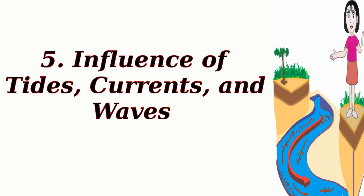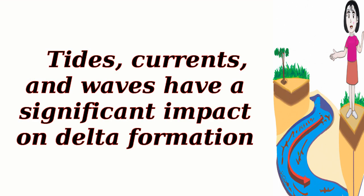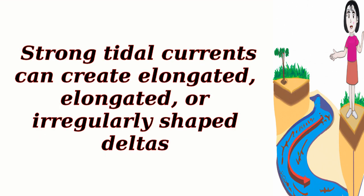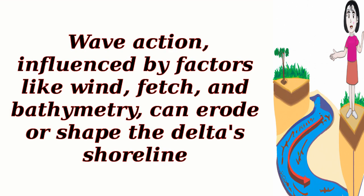5. Influence of tides, currents, and waves. Tides, currents, and waves have a significant impact on delta formation. Tidal processes, such as tidal currents and tidal range, affect sediment transport and distribution within the delta. Strong tidal currents can create elongated or irregularly shaped deltas. Wave action, influenced by factors like wind, fetch, and bathymetry, can erode or shape the delta's shoreline.